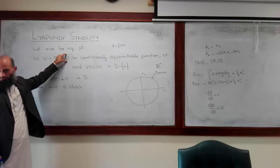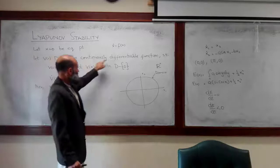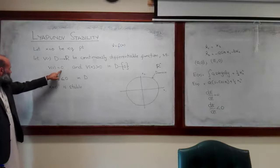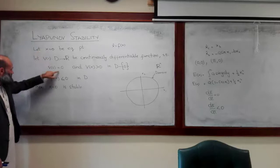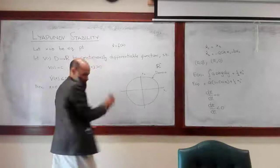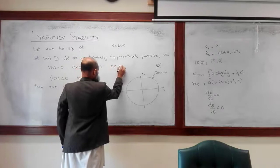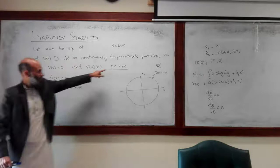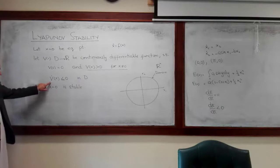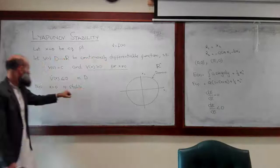Furthermore, this function is continuously differentiable — the derivative exists. Furthermore, V(0) = 0, that is, if we substitute x = 0 into this function, that will be equal to 0. And for x not equal to 0, V(x) is greater than 0. Additionally, if we find the derivative of that function along the trajectories of the system and it comes out to be negative definite, then the equilibrium point is stable.